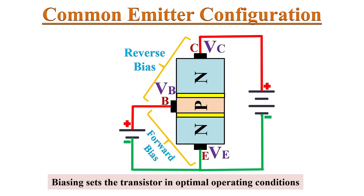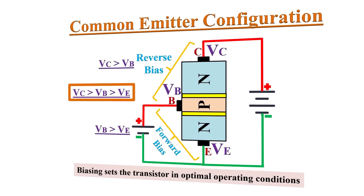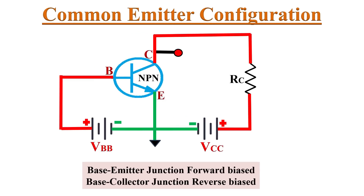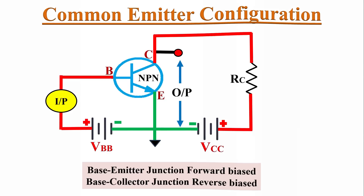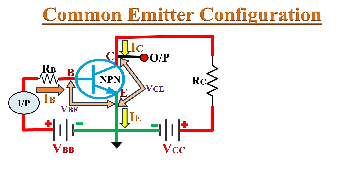This is how we must apply biasing in a common emitter configuration of an NPN transistor: VC must be greater than VB, and VB must be greater than VE. Here the emitter terminal is common for the biasing. The schematic representation of the common emitter amplifier has input applied between base and emitter, and output measured between collector and emitter terminal. The voltage VBE is the input voltage, and VCE is the output voltage. IB is the base current — that is the input current — and IC is the collector current — that is the output current.